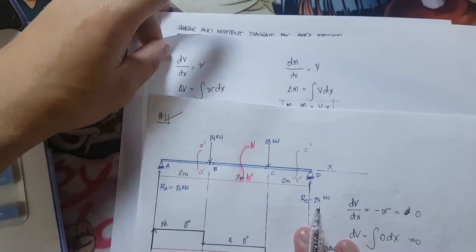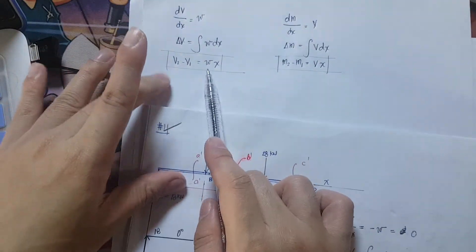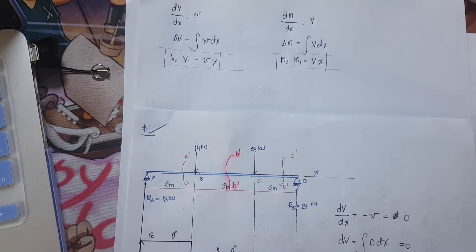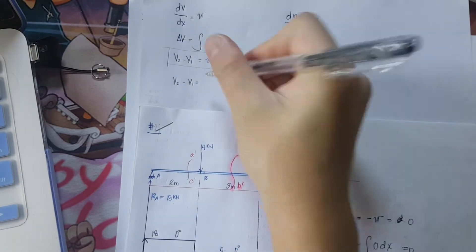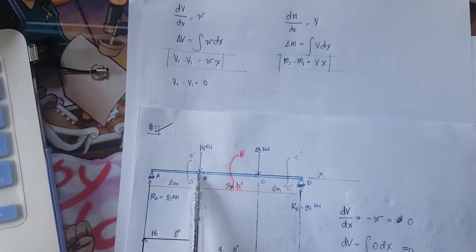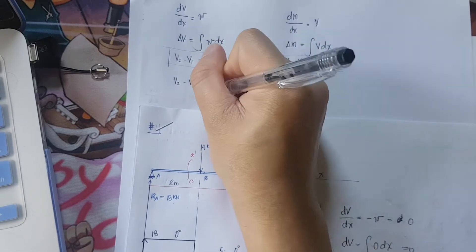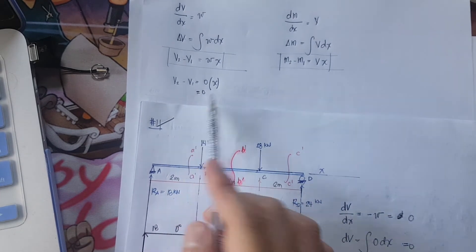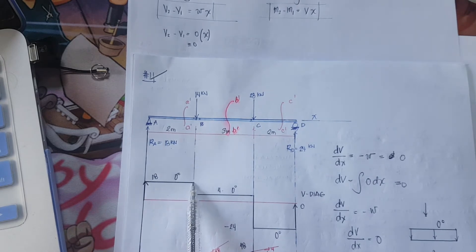Going back to our first example, we have our load diagram with an upward force of 18 kilonewtons. Is there any load between point A and point B? There is none, so V2 minus V1 is equivalent to zero at any distance from A to B. So 18 plus zero is still 18 — it will just go straight line up to point B.